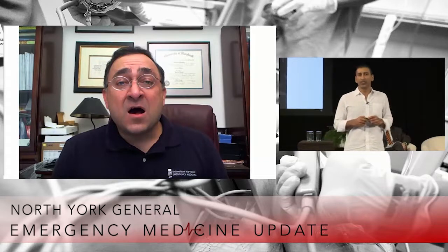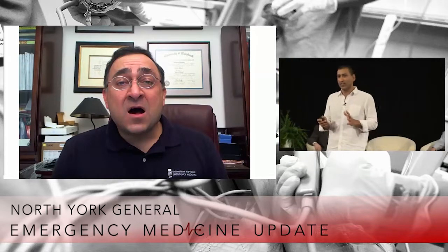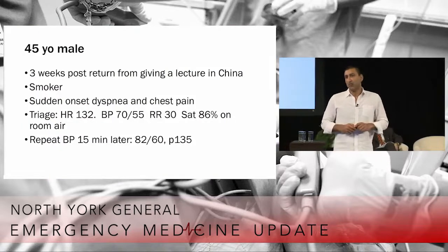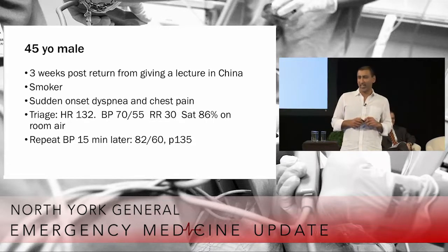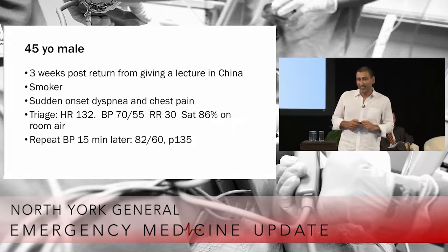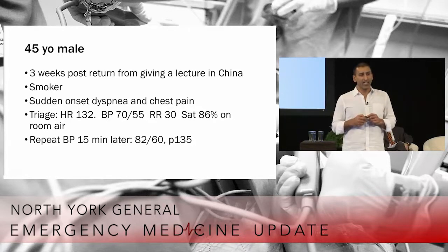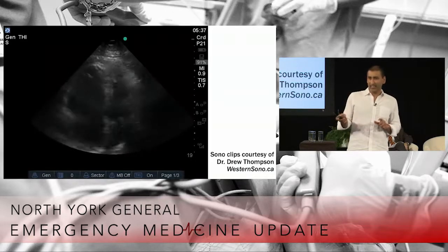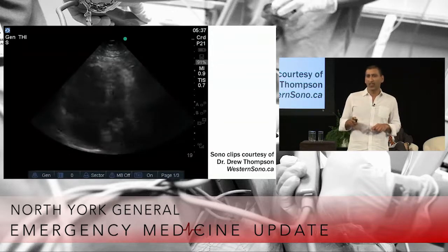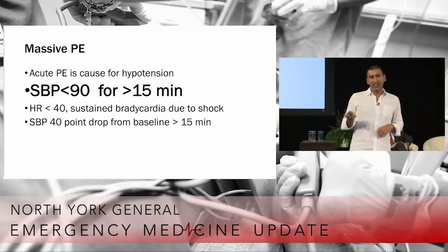This is a random person who presented with shortness of breath — we'll call him Anil. Anil presents with chest pain and shortness of breath three weeks after giving a talk in China. He's a closet smoker. He's tachycardic with a heart rate of 132, blood pressure 70 over 55, and sat 86% on room air. Repeat blood pressure after triage continues to be low. This is his point-of-care ultrasound — you can see his RV is quite a bit bigger than his LV. He's got RV strain. This guy has a massive PE.